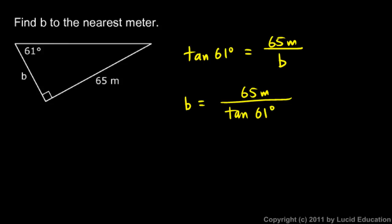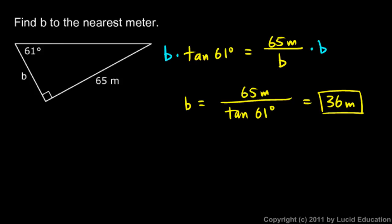On the calculator that comes out to 36 meters. If you don't see how to get there, multiply both sides by B — those cancel out — then divide both sides by the tangent of 61 degrees, and that gives you 36 meters as your answer.